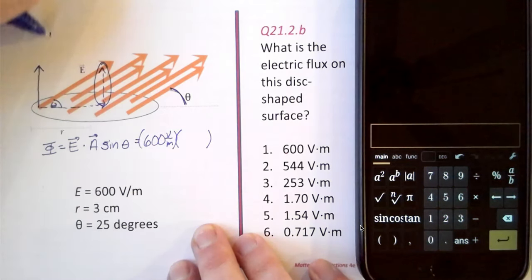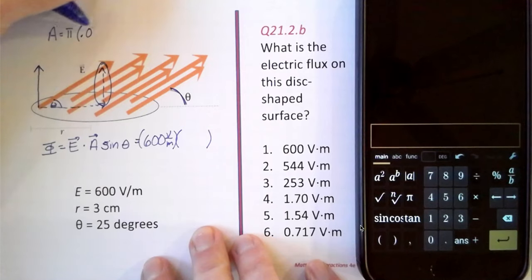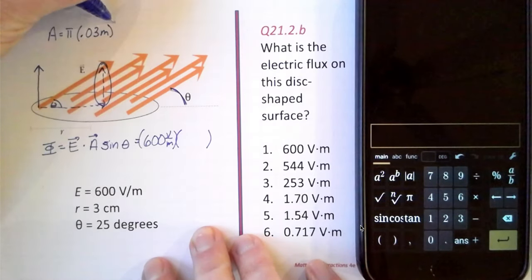Let's calculate that up here. Pi times the radius squared. And the radius is 3 centimeters, so that's 0.03 meters squared.